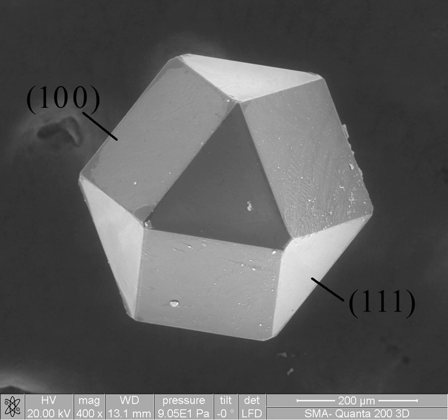Macrostructure is the appearance of a material in the scale millimeters to meters. It is the structure of the material as seen with the naked eye.